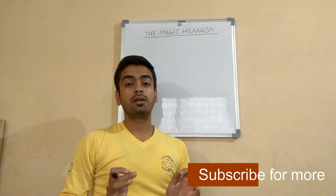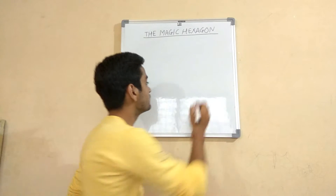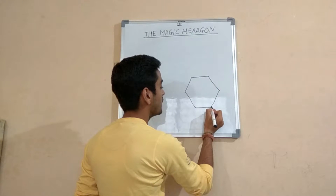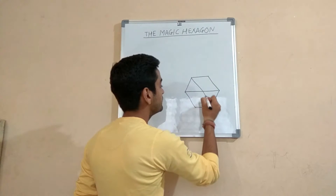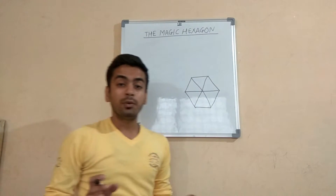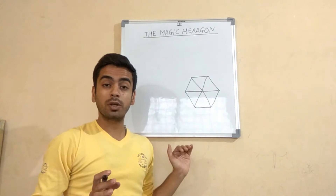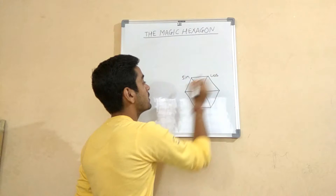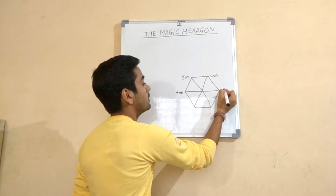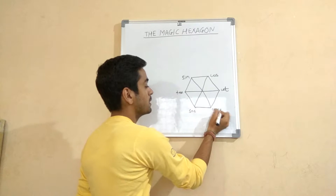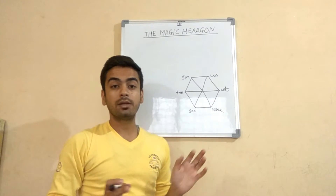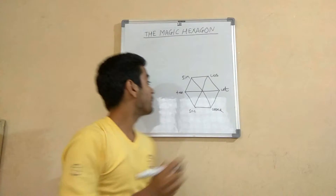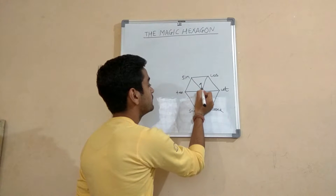Let's have a look at this hexagon. You have to draw a simple hexagon first, join the edges, and then write the functions from left to right and top to bottom. First you write sin, then cos, then cot, sec, and cosec. The important point is you have to write the digit 1 in the middle of the hexagon, which will be very important while writing these identities.